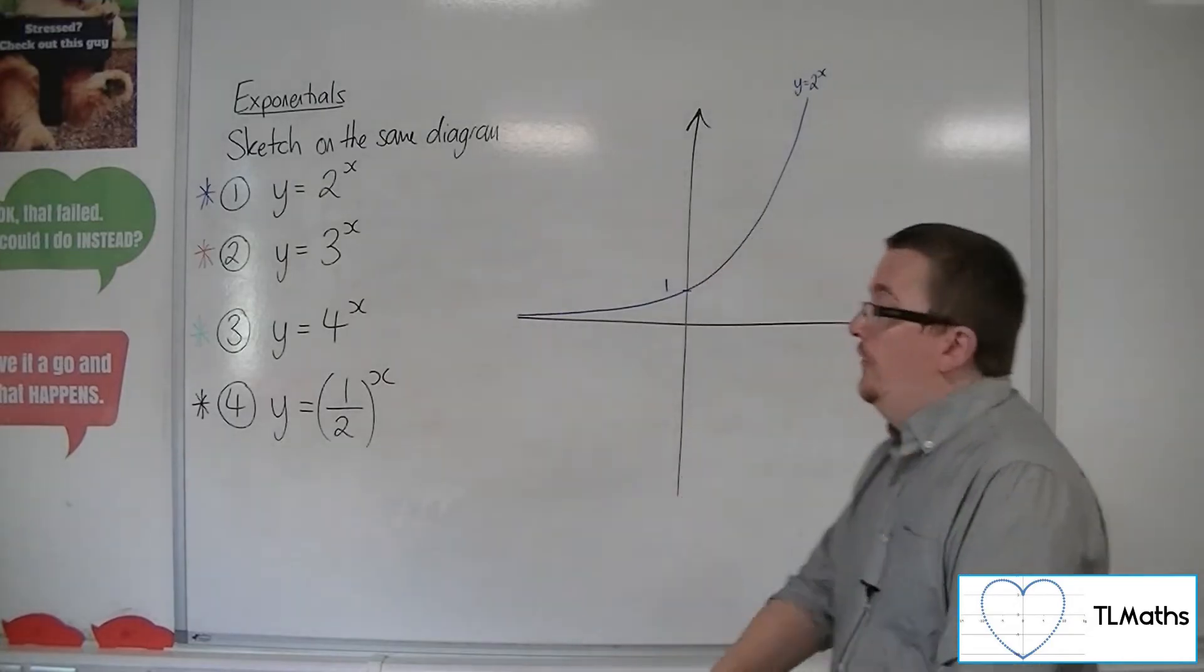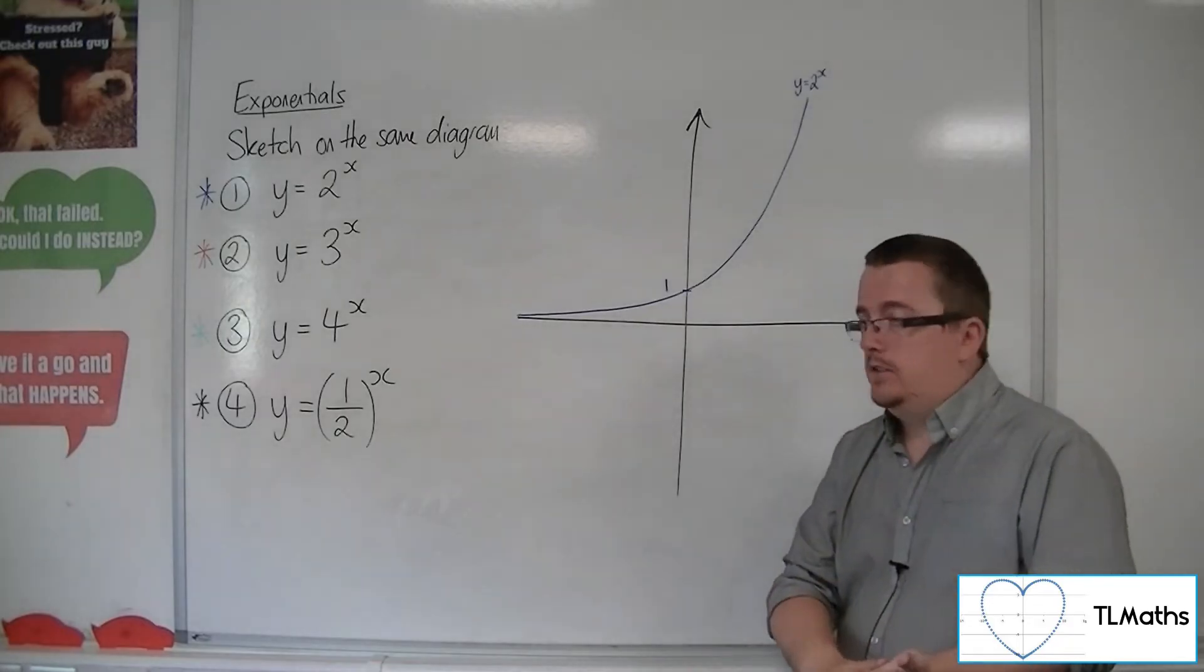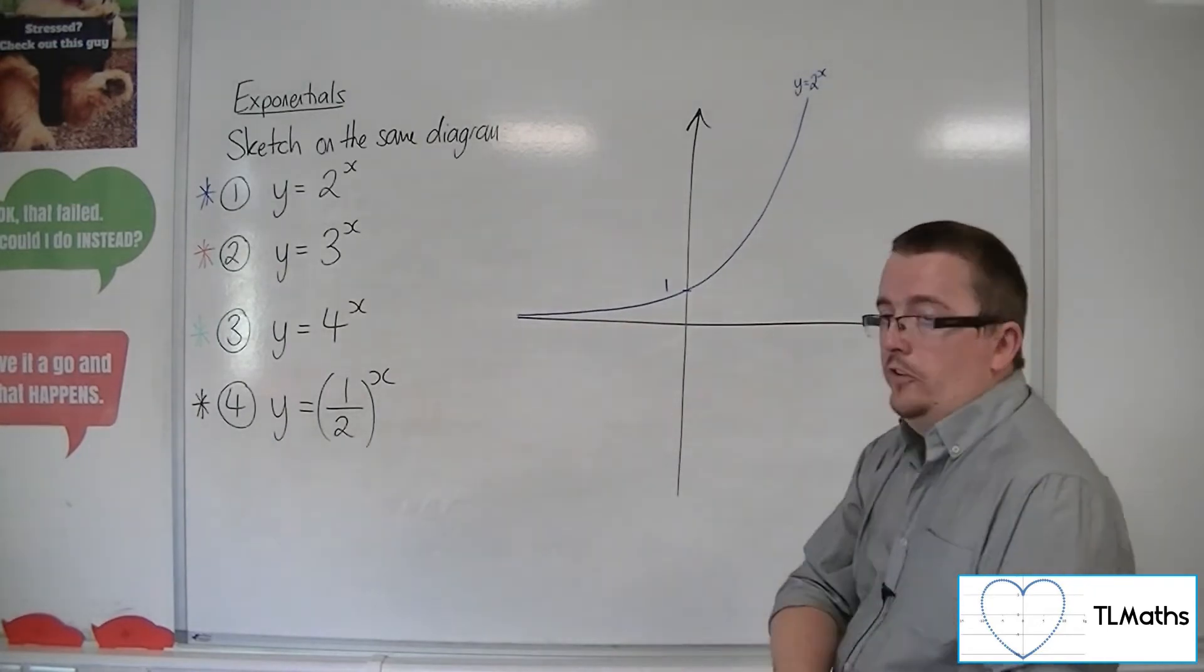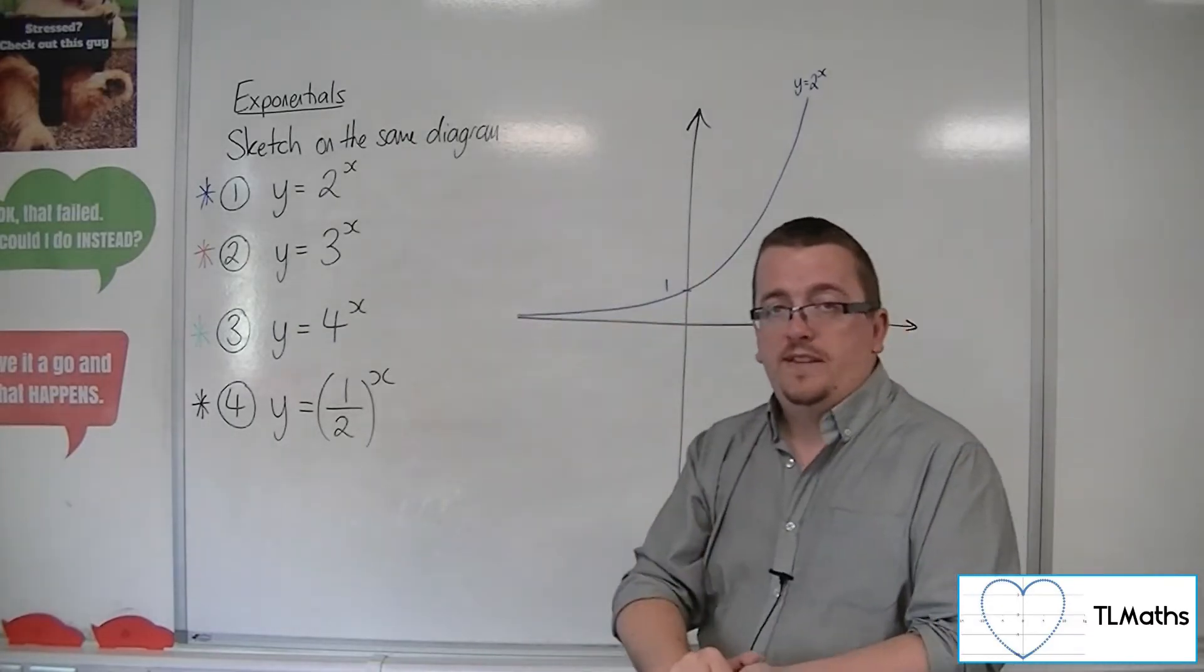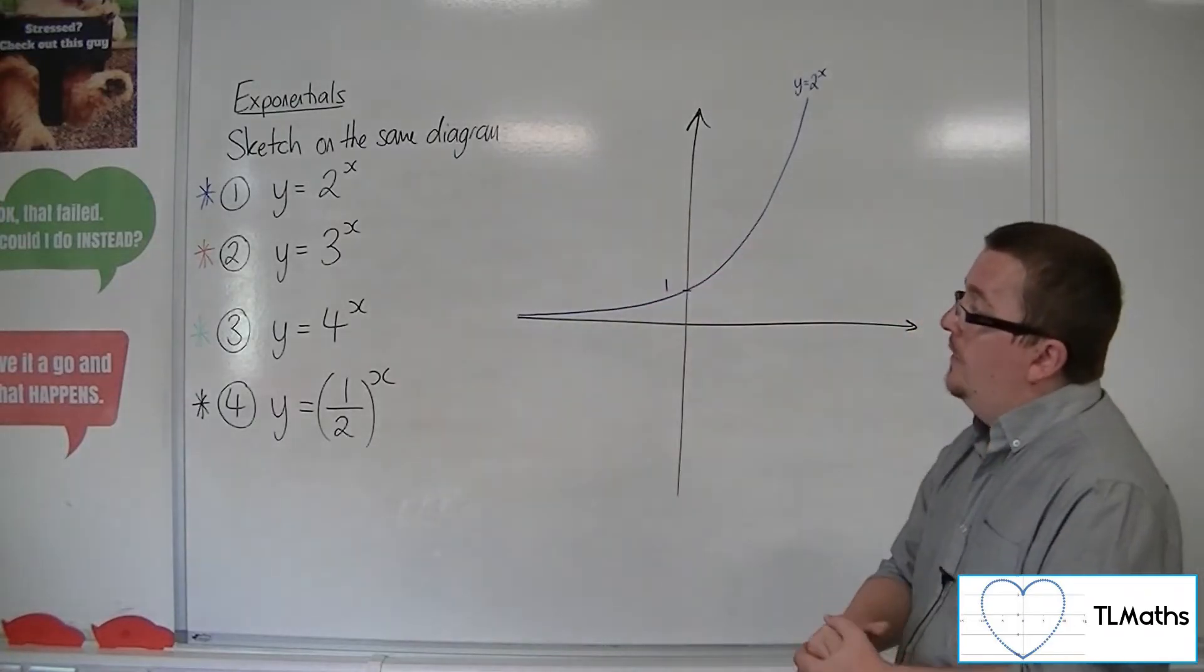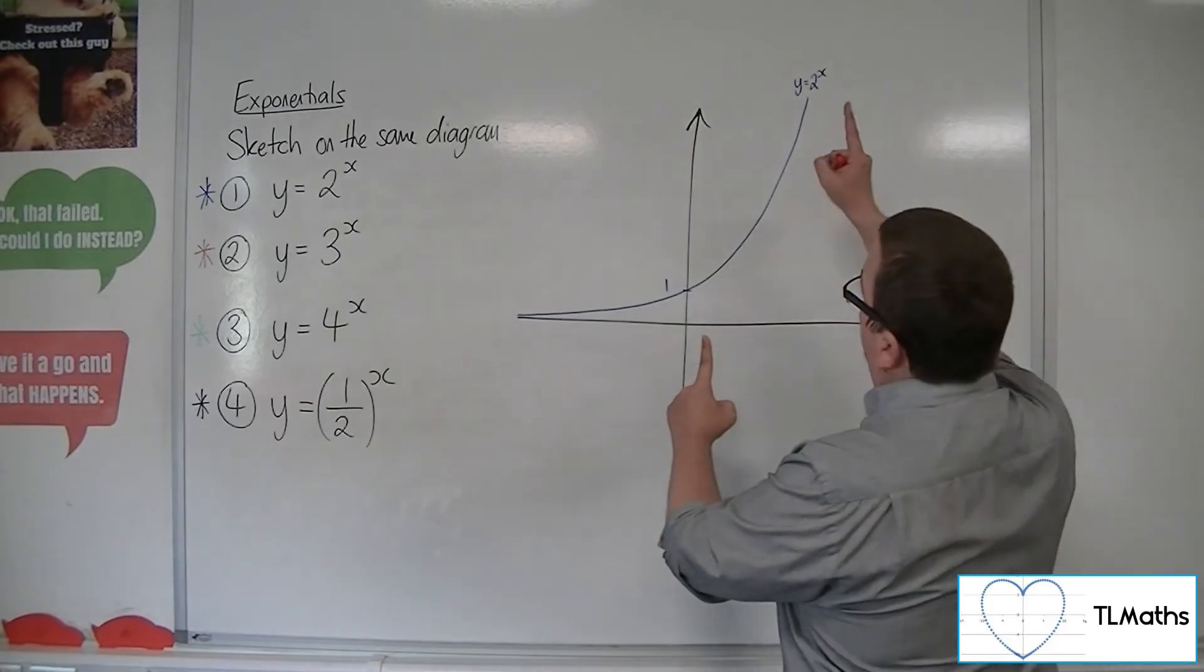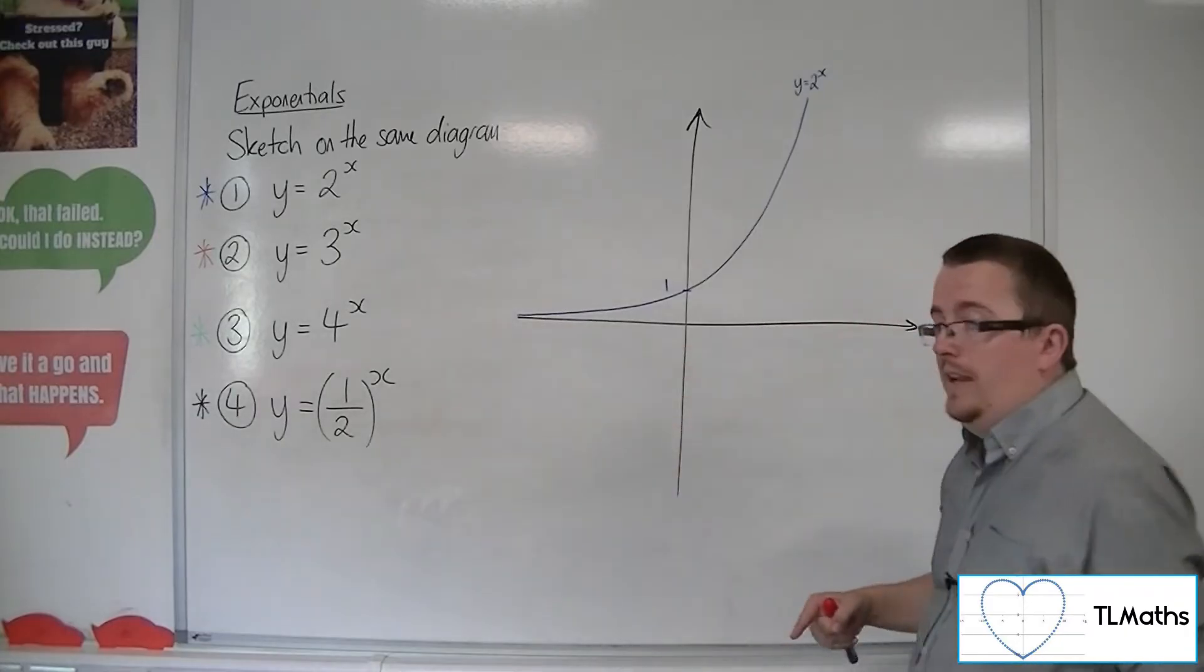which is larger than the y values for 2 to the x, which was 2, 4, 8. So 3 to the x increases faster than 2 to the x. Now, as you go to the left of the y-axis, so x is minus 1, minus 2, minus 3, you get y values of 1/3, 1/9, 1/27, which are smaller than the y values for 2 to the x, which would have been 1/2, 1/4, 1/8. So it increases faster to the right of the y-axis and decreases faster to the left of the y-axis.